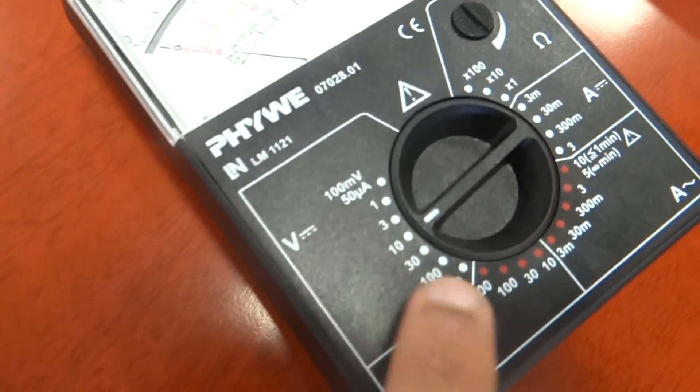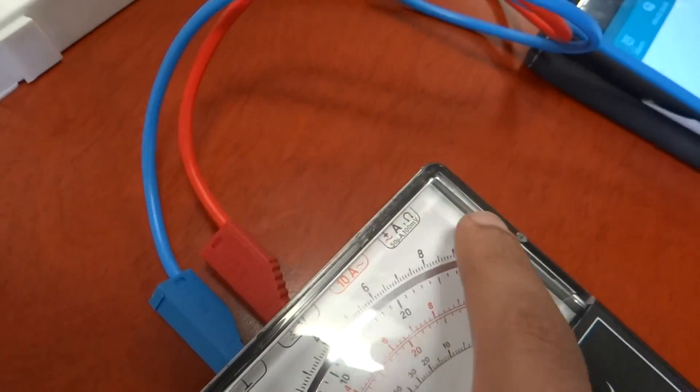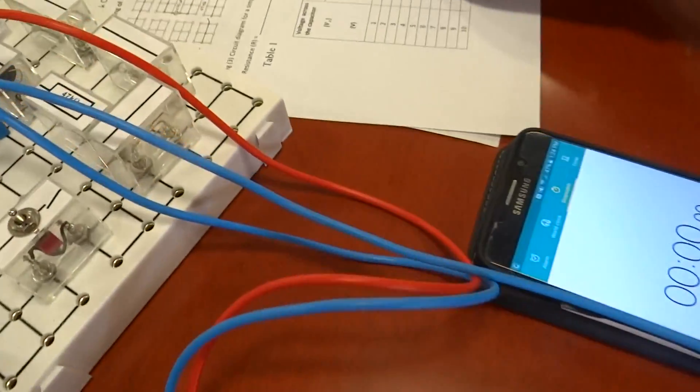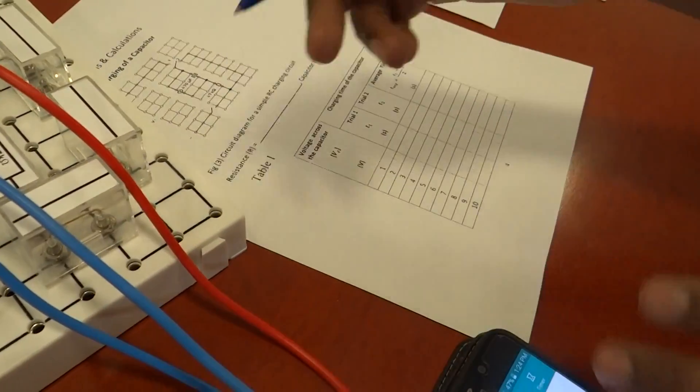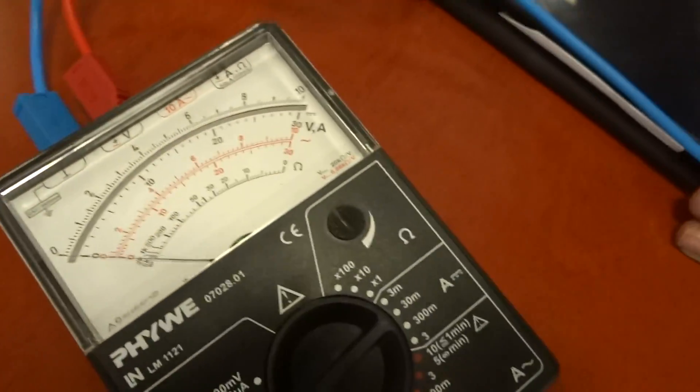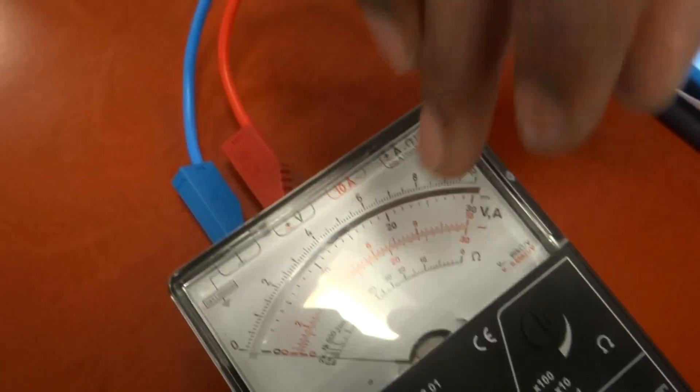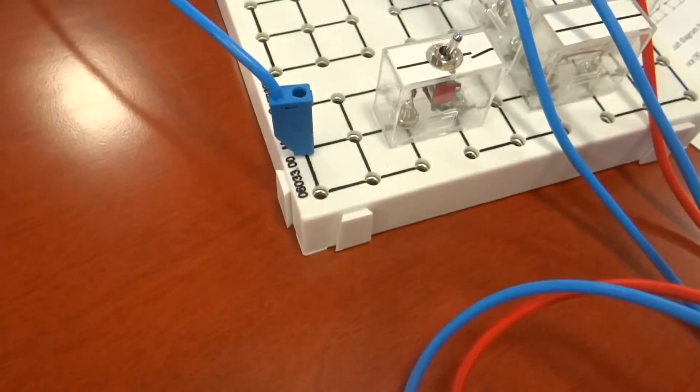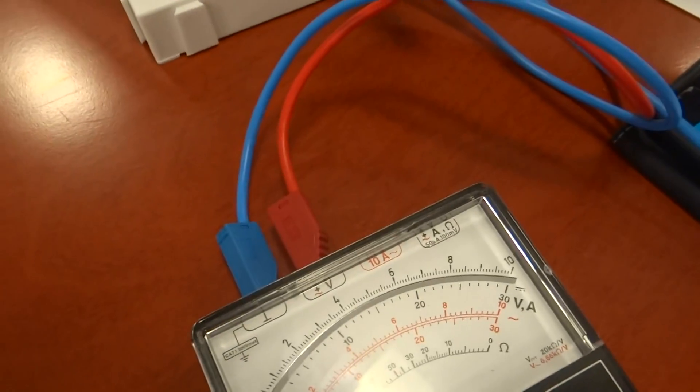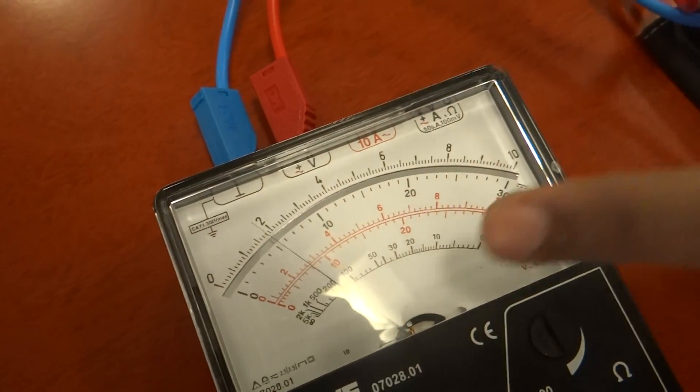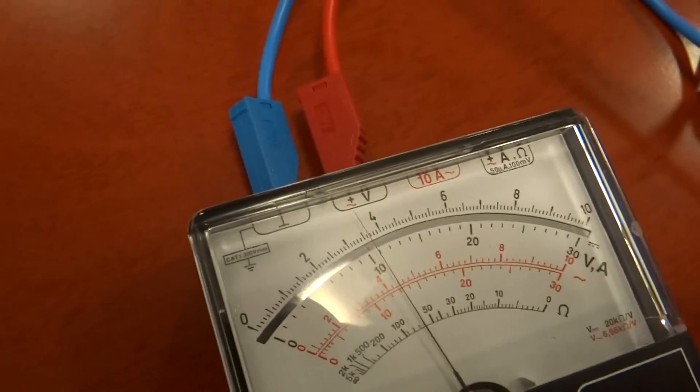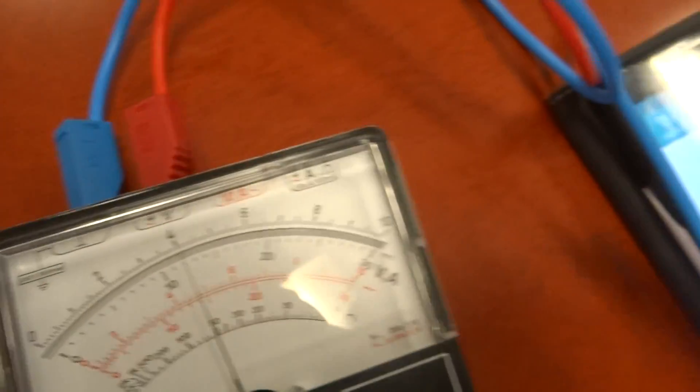So we are going to start taking the reading. Whenever I start, I turn on the key. 1 volt at 1.3 seconds. 2 volts at 2.5 seconds. 3 volts at 9 seconds. It's coming to 4 volts at 12.5 seconds.